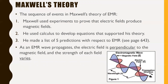Maxwell used experiments to prove that electric fields produce magnetic fields, and he used calculus to develop equations that supported his theory. He also made a list of five predictions with respect to EMR — if you're interested, those are on page 643 of your textbook. Maxwell was never able to prove this theory of EMR himself; that came later.